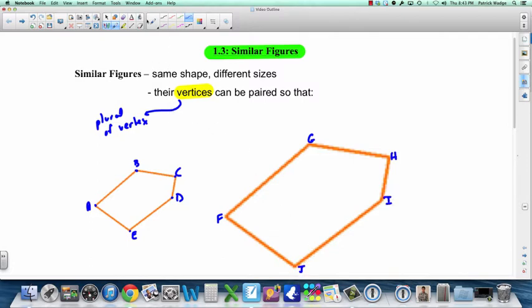What's true about similar figures is that their vertices can be paired so that corresponding angles are equal to each other. For example, angle A in the first shape, which angle does that correspond to in the other shape? That corresponds to angle F. So angle A must be equal to angle F if these are similar. Angle B corresponds to angle G, so angle B is equal to angle G. It's the same with all the different angles.